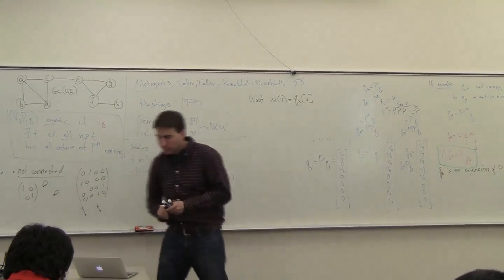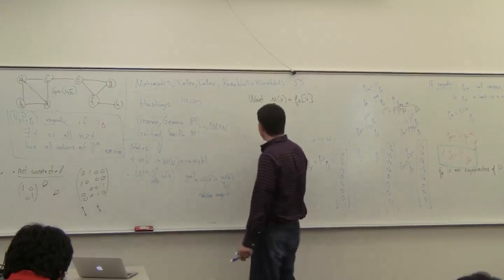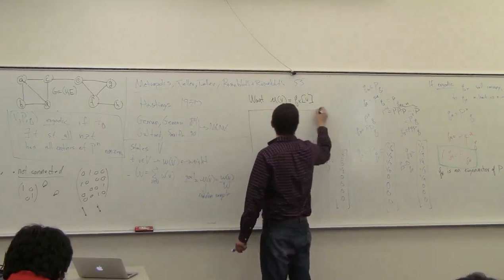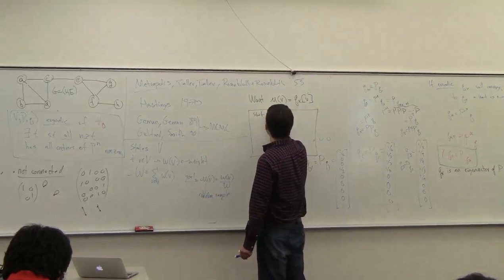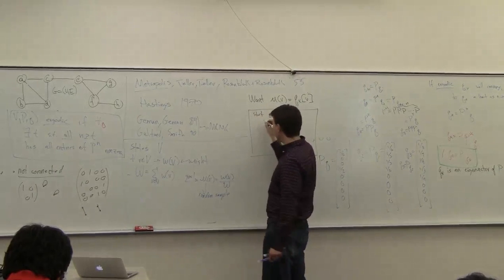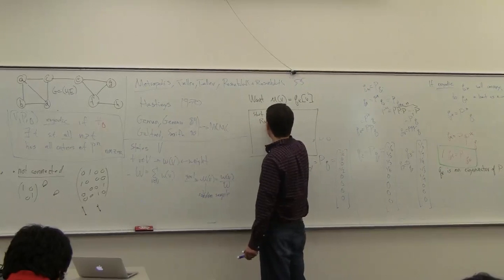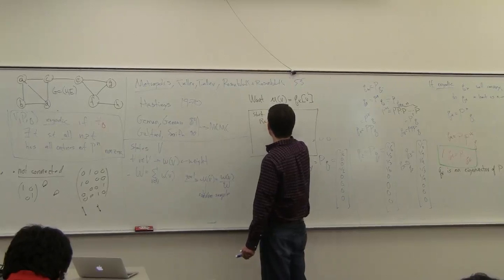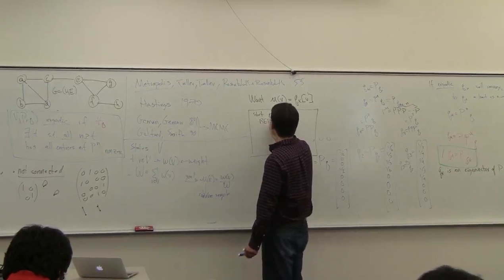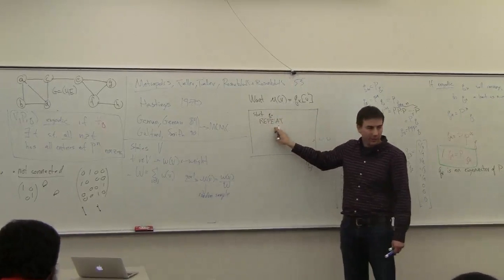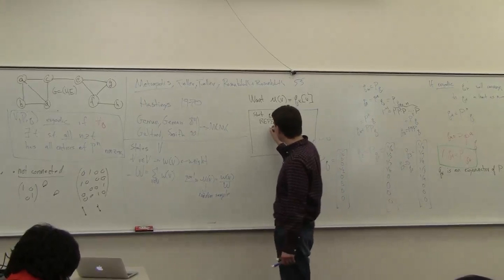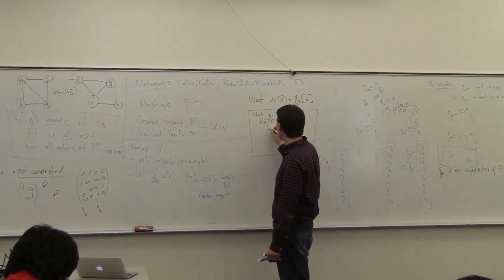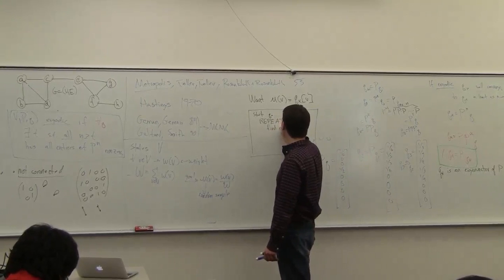So what I'm going to do is I'm going to start at Q zero and then I'm going to repeat. Right. And so this is me going to the limit. I'm going to the limit. And then what you do is you find a neighbor.